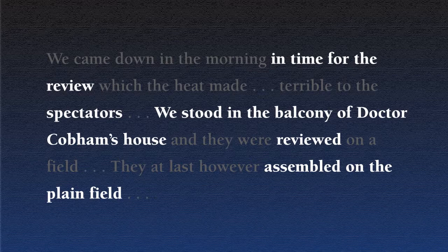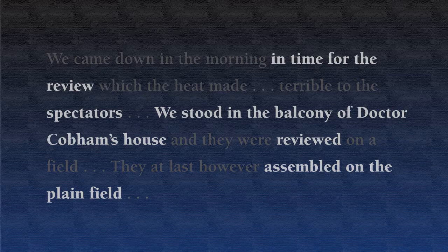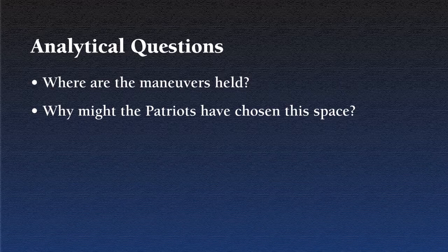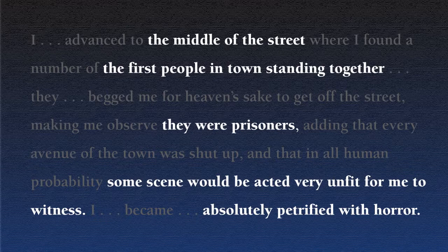The first excerpt describes the maneuvers of the local militia. The analytical questions encourage students to see the marching and battle exercises as signals to the Wilmington community that the Patriots can enforce their decrees with arms. The maneuvers appear to have been advertised and are conducted in an open space, near homes, where spectators can assemble easily. The second excerpt we offer for analysis also focuses on a public act of intimidation: imprisoning loyalists in a street. The threat of violence, certainly present in the first excerpt, is now made more ominously explicit.